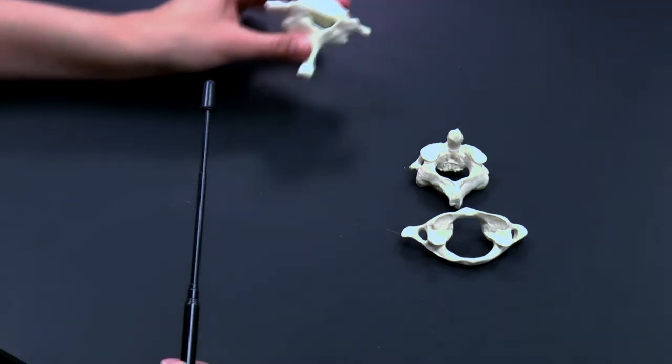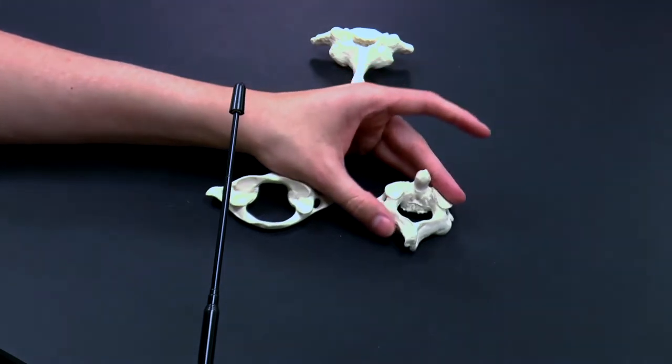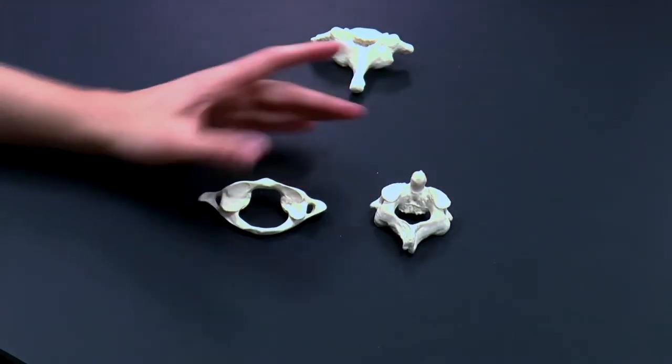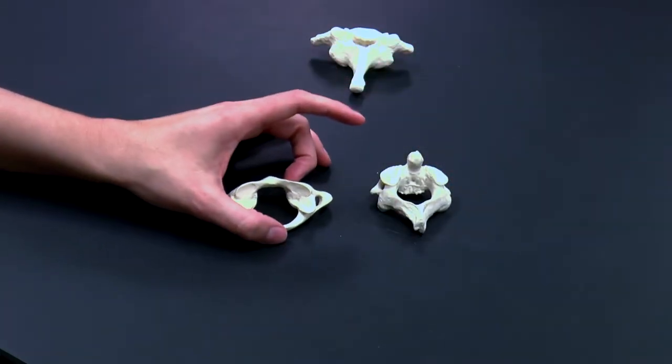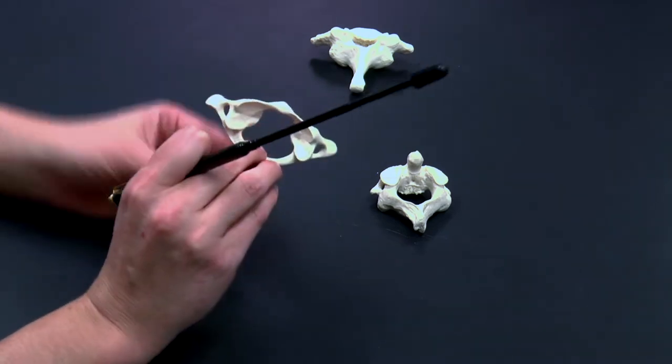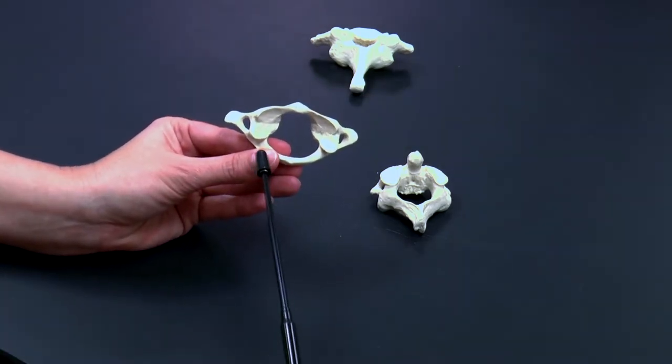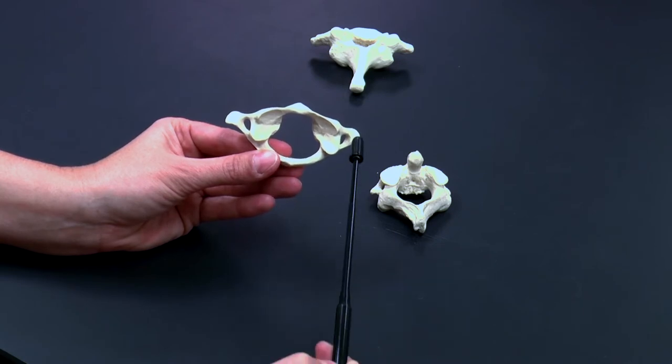But there are two special cervical vertebrae that are named C1 and C2. C1 is most superior and C2 is then inferior to that. C1 is also known as the atlas, and I'm just going to look at the atlas first. So to orient ourselves, this is anterior and posterior, and these are lateral.